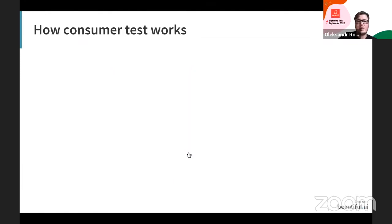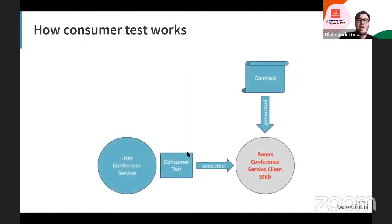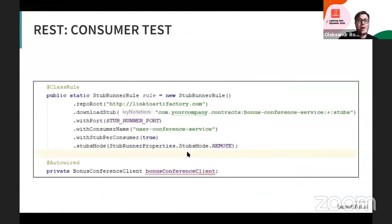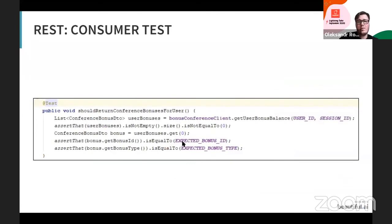So how does the consumer test work? After we have the contract, the Spring Cloud Contract tool generates a WireMock stub that is used when we implement the test — calling an almost real implementation of this service communication. On the consumer side, we define where we have the contracts, get the stub for each consumer, and then write a simple API test: perform a GET request, get the response, and assert it — verifying we get a bonus array and that the first bonus has a bonus ID and bonus type.